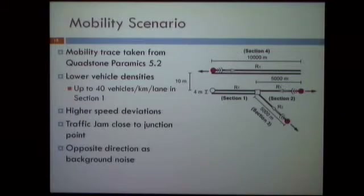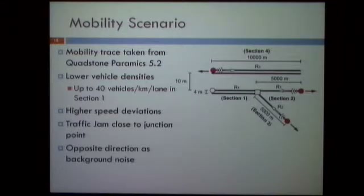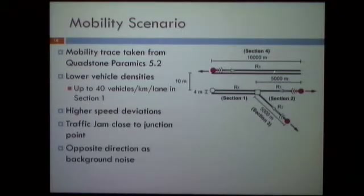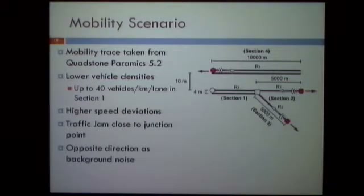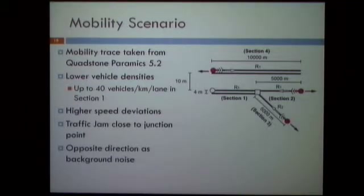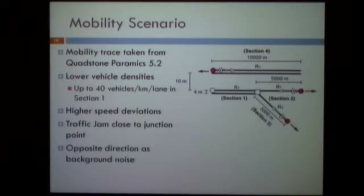For the mobility scenario, we used a trace taken from the Quadstone Paramics traffic simulator 5.2. We consider a scenario combining the simple static scenarios: a multiple-lane road in the opposite direction acting as background radio noise, a section one where we induce a traffic jam by making vehicle generation rates higher, and sections two and three with moderate traffic.